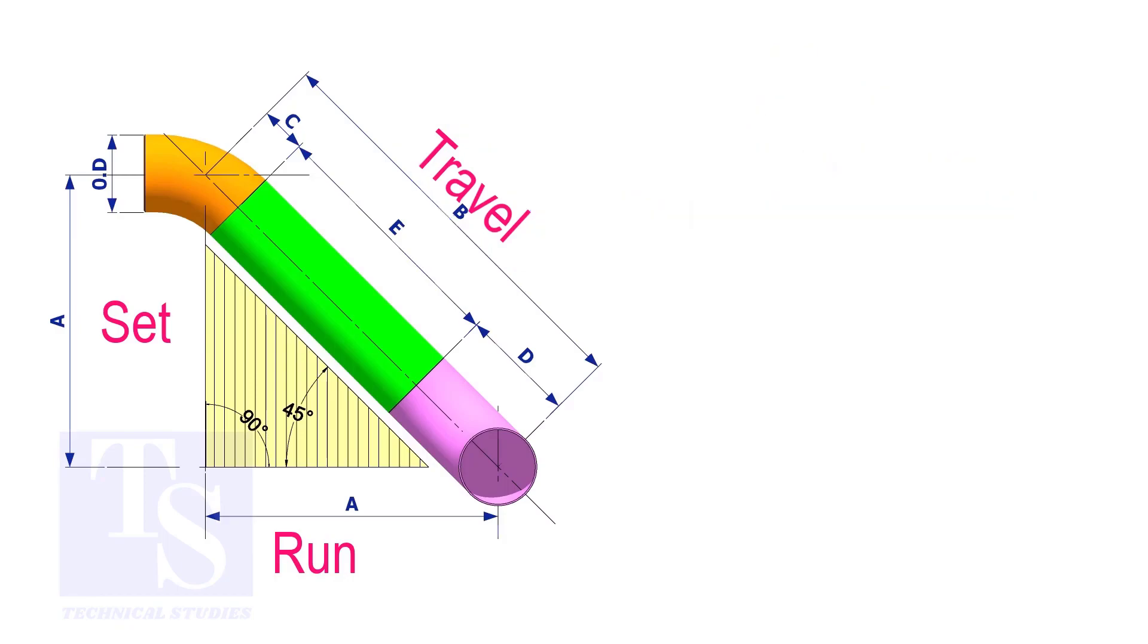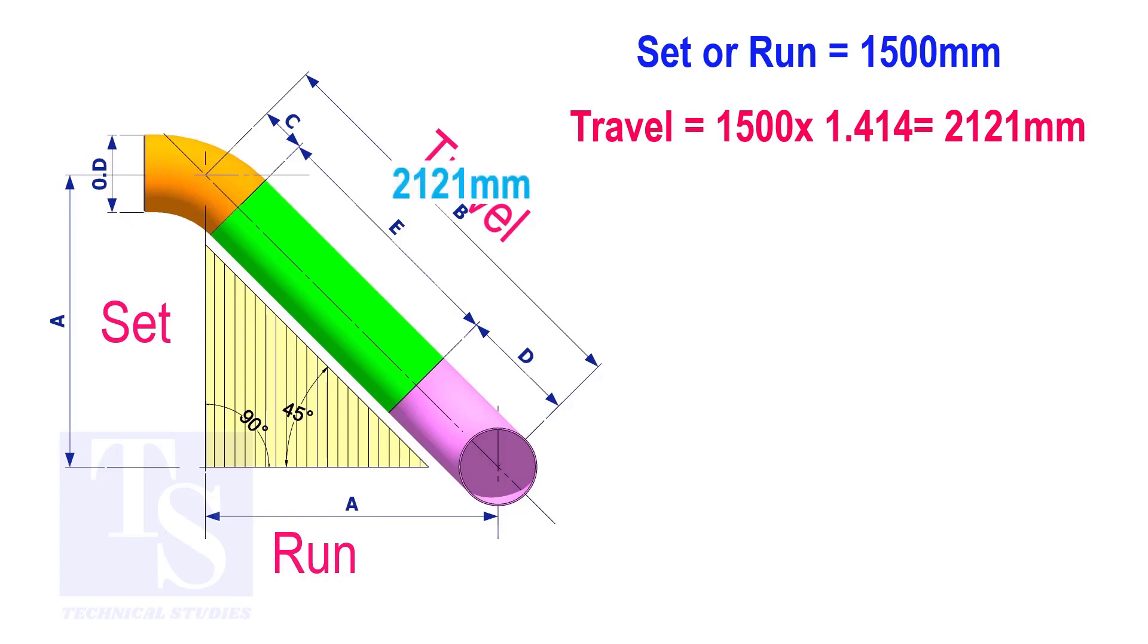Try another example. Suppose the value of the set or the run is 1500 millimeters. The value of the travel will be 1500 multiplied by 1.414 equals 2121 millimeters.